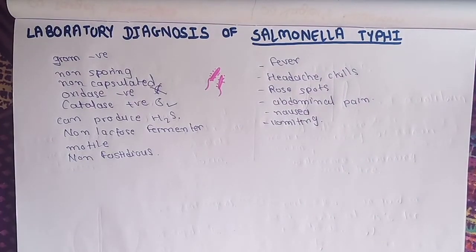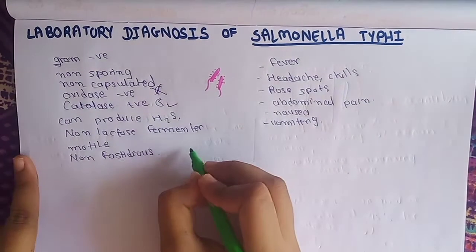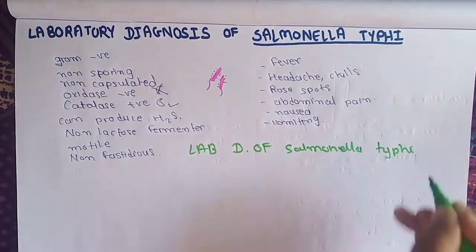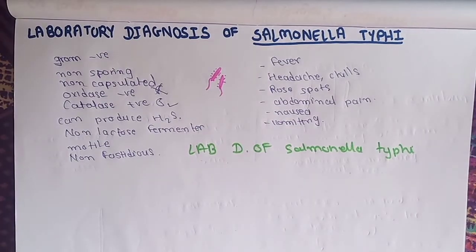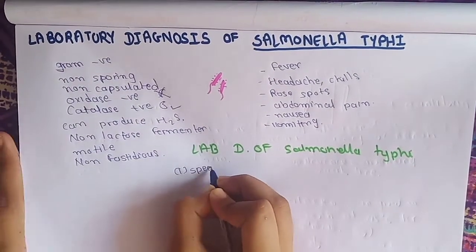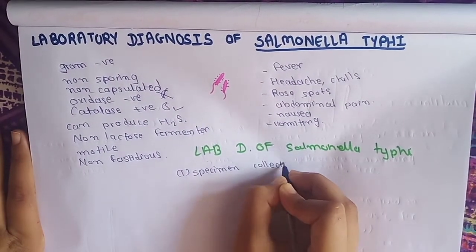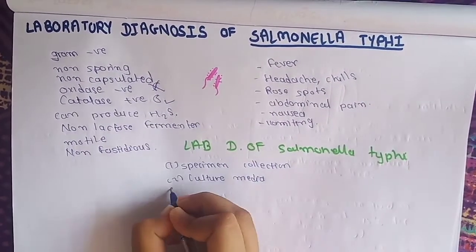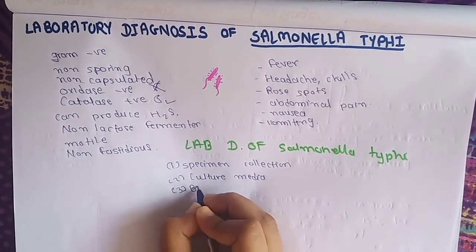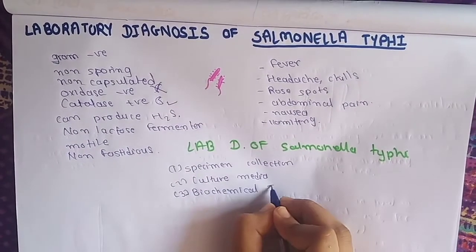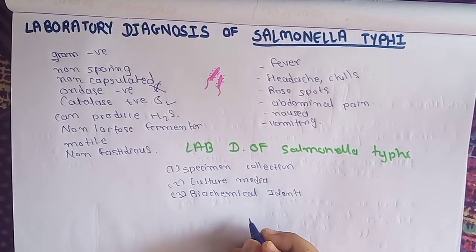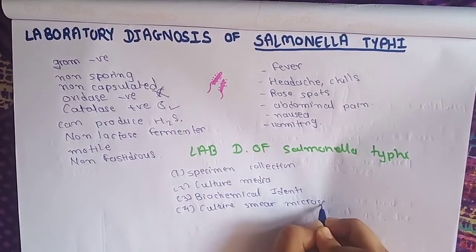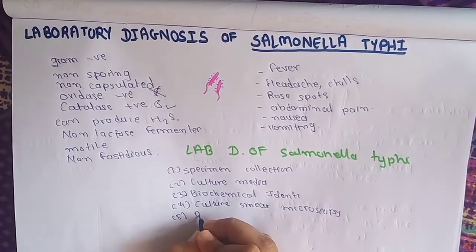The laboratory diagnosis of Salmonella typhi is divided into six steps: first, specimen collection; second, cultural media examination; third, biochemical test for identification; fourth, culture smear microscopy; fifth, molecular methods; and sixth, typing.